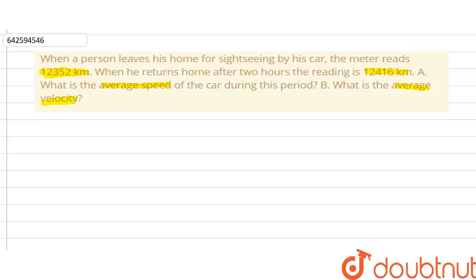Now the meter provides us the information about the total distance that we have traveled so far. So when he returned home, the meter was showing 12,416 kilometers.